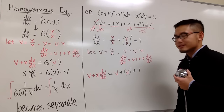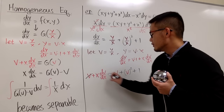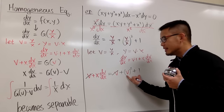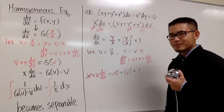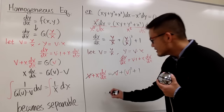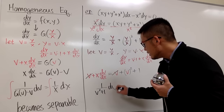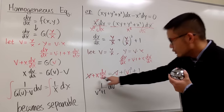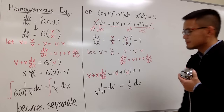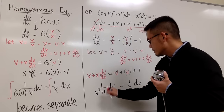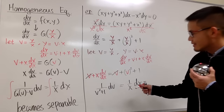We have v² plus 1 remaining after the v's cancel. Now divide both sides by v² plus 1, divide by x, and multiply by dx on both sides. On the left-hand side we end up with 1 over (v² + 1) dv, and on the right-hand side we have 1/x dx. All the v's and dv's are on one side, and all the x's and dx's are on the other — it's now fully separated.